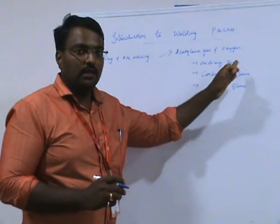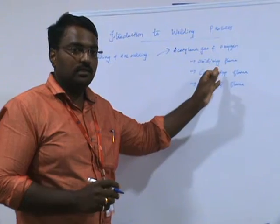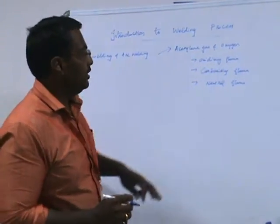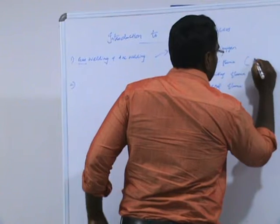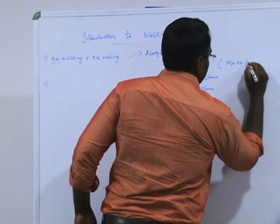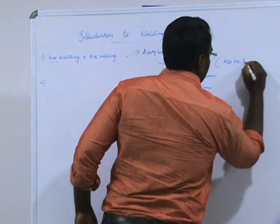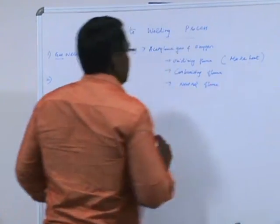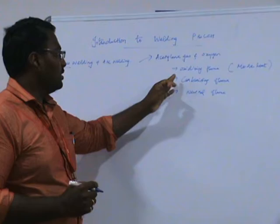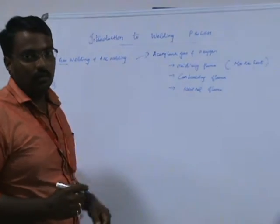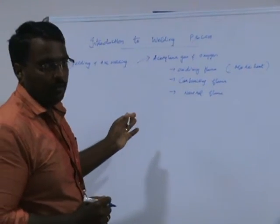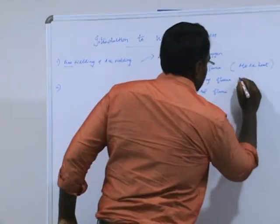If you see the oxidizing flame, since we are giving more oxygen content, we will be getting more heat energy out of the oxidizing flame. In the second case, in the carburizing flame, since we are giving more amount of acetylene gas, we will be getting less heat energy.